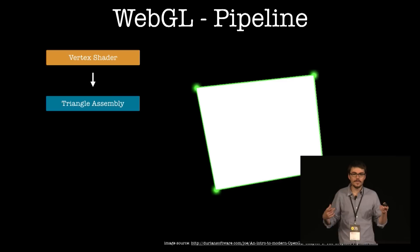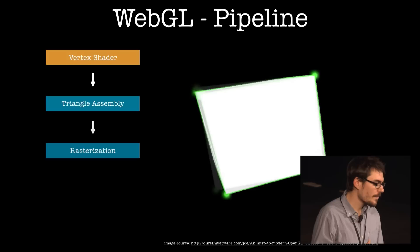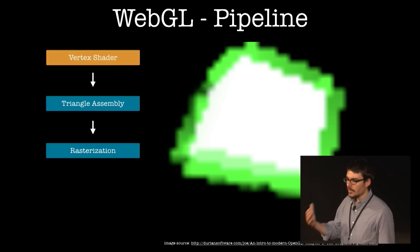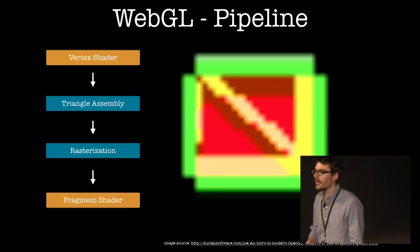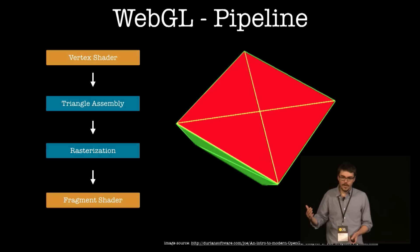Then it goes to a triangle assembly step — you cannot program anything here. It figures out how points go together to form faces, creating triangles from the points. Then comes rasterization: you have a 3D object but you want to put it onto the 2D screen, so it projects everything. Finally, there is a fragment shader step, which you can also program, where you decide what color each pixel on the 2D screen will be. So you have a lot of power in deciding how rendering is done with this language.